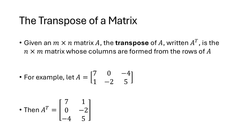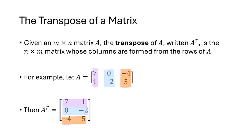Another operation we can do on matrices is the transpose. When we transpose a matrix, we write A with a little T: Aᵀ is the n by m matrix — notice the sizes switch. So if A was m by n, then Aᵀ is n by m. We take the rows of our matrix and transform those into the columns of Aᵀ. The two rows of A become the two columns of Aᵀ, keeping the numbers in the same order. Equivalently, we can take the columns of A and change those into the rows of Aᵀ.